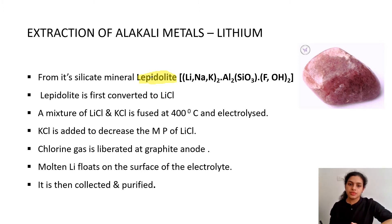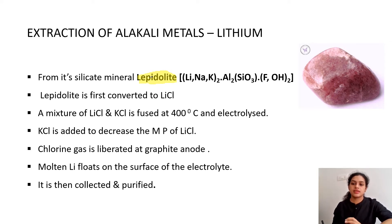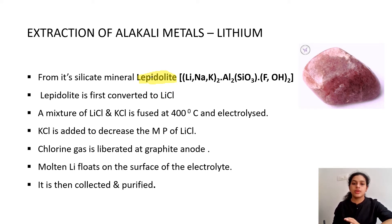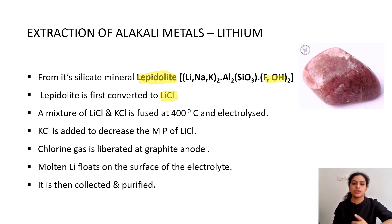The mineral from which the metal is extracted is called the ore. Lepidolite has varying compositions of lithium, sodium, and potassium with aluminum silicate, and the anions are fluoride or hydroxide ions. The first step is to convert the lithium present in lepidolite into lithium chloride — the fluoride or hydroxide is converted to lithium chloride. This is then mixed with potassium chloride, fused, and electrolyzed at 400°C.